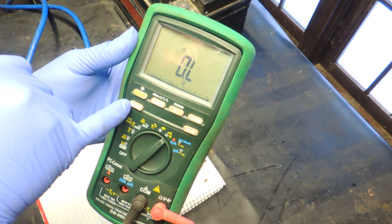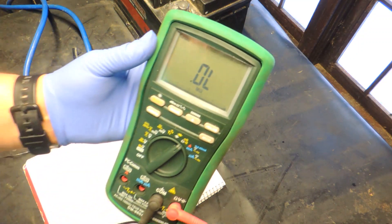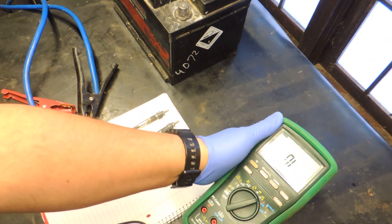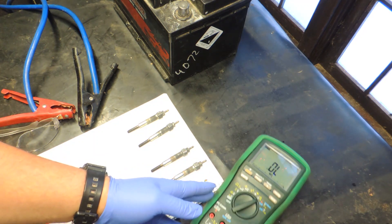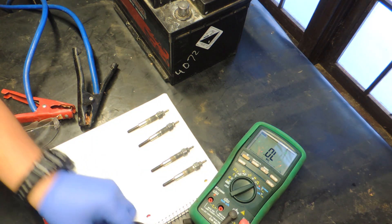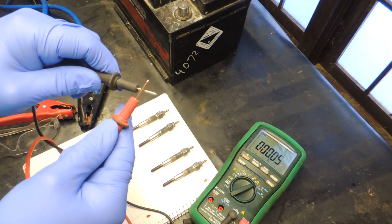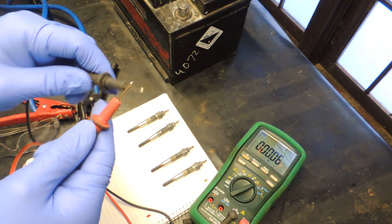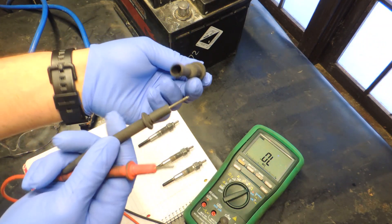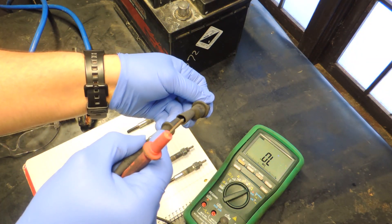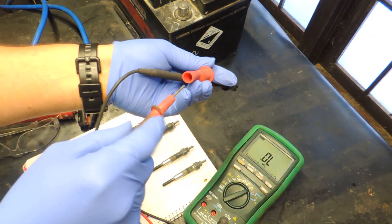Now we're switching to ohms, you see that ohm symbol, and we're going to check the resistance for the glow plugs. Resistance should be around 1 ohm. For example, for Mitsubishi Delica standard value is 1.1 ohms. You can check your vehicle manufacturer specs but generally it should be around 1 ohm. If you see the OL, it means open circuit, electricity cannot flow and glow plug is defective.